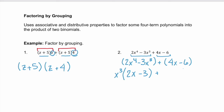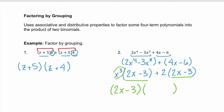Now we look at our second grouping. The GCF here is 2 — we factor out the 2 and we're left with (2x - 3). Now we're down to two terms, and both have the binomial (2x - 3) in common. If we factor out (2x - 3), we're left with another binomial, (x³ + 2).